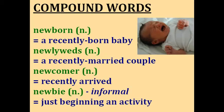A baby that has just recently been born is a newborn. Two people who have just recently been married are newlyweds — that comes from newly and wedded, the word for the marriage ceremony. Someone who has recently arrived at an event or joined a social group is a newcomer. And then we have the slang word newbie — that's an informal word for someone who is just beginning some activity and doesn't have much knowledge or experience yet. For example, if I want to learn computer programming and I'm in my first week, I could say I'm a newbie in computer programming.